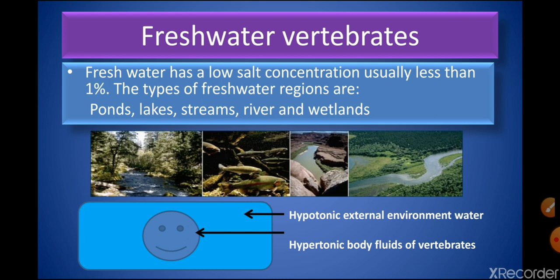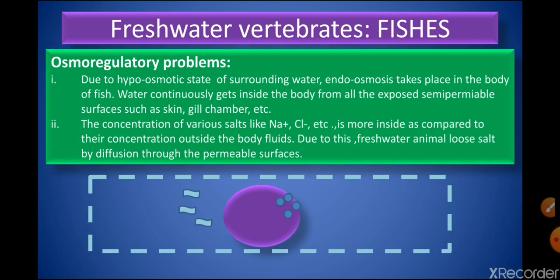Next we come to freshwater vertebrates. Fresh water has a very low salt concentration — examples include ponds, lakes, streams, rivers, and wetlands. Here the opposite situation to the marine environment occurs: the external freshwater environment is hypotonic, whereas the body fluids of the vertebrates living in it are hypertonic in nature.